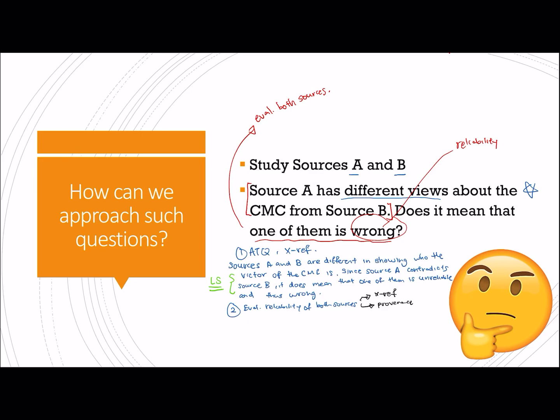Yes, you can use cross-referring again to check both sources. So you cross-refer A to maybe C and cross-refer B to D for example, but this is a very very lengthy process and I really do not recommend it. It will take you an extraordinarily long time for a question that is probably only worth six or seven marks. So instead, I will straight away go to evaluating the provenance of both sources A and B.